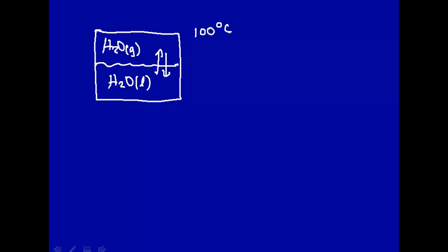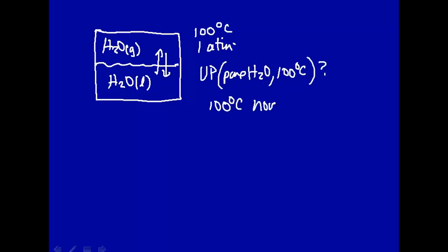This is at 100 degrees C and is at 1 atmosphere. Now what is the vapor pressure of pure water at 100 degrees C? 100 degrees C is the normal boiling point of water. Normal boiling point implies a boiling point when the atmospheric pressure is 1 atmosphere.